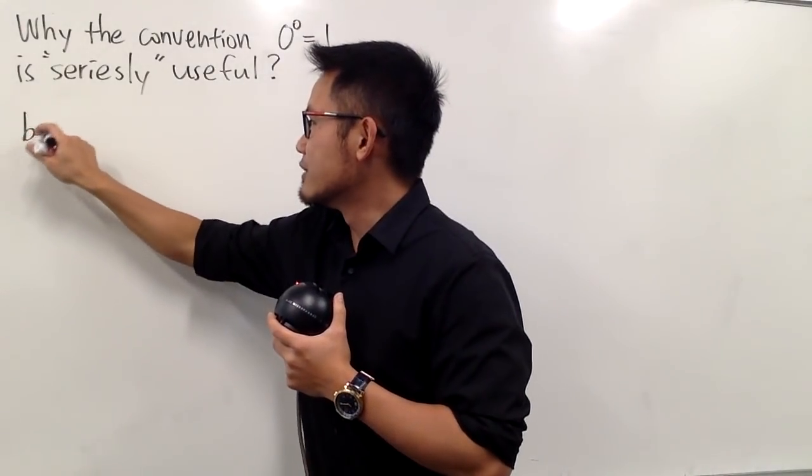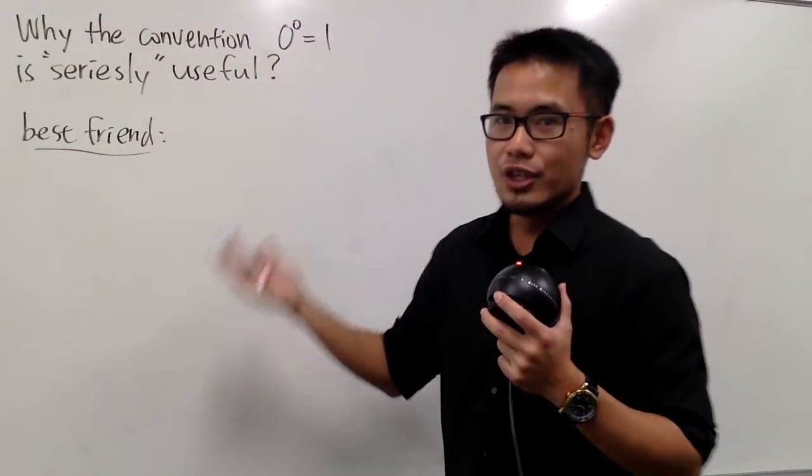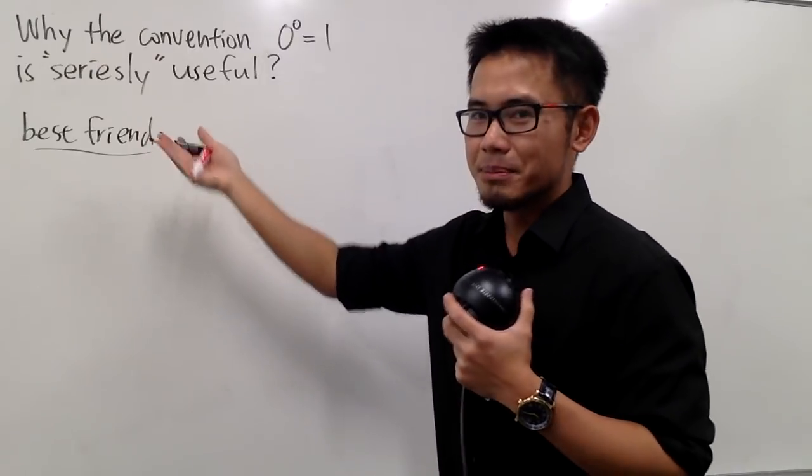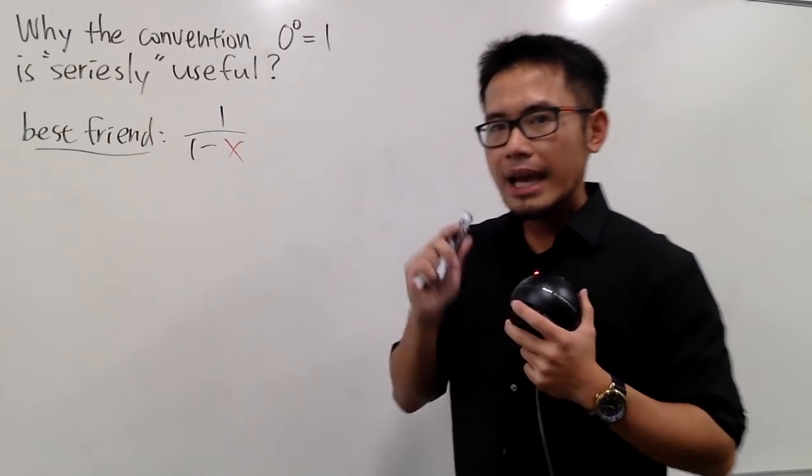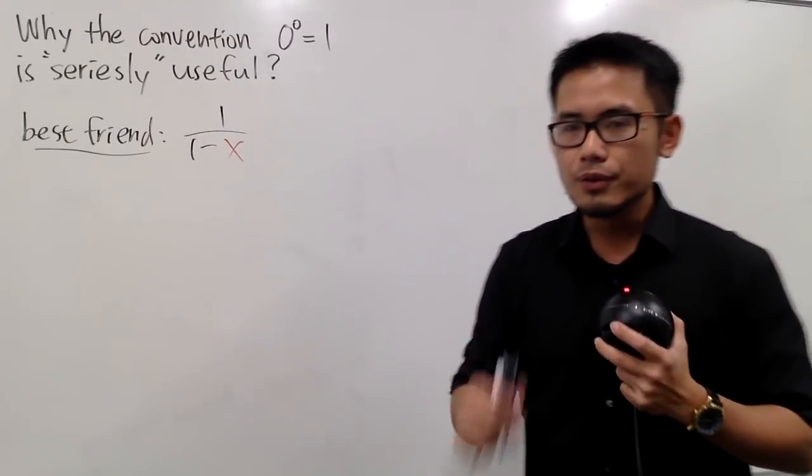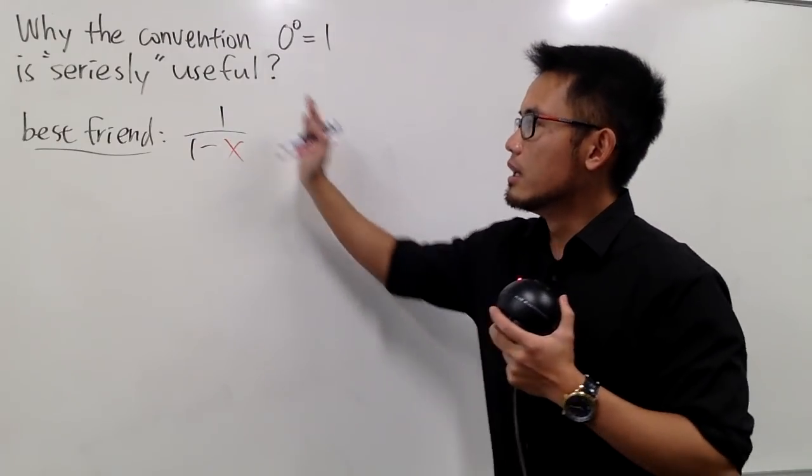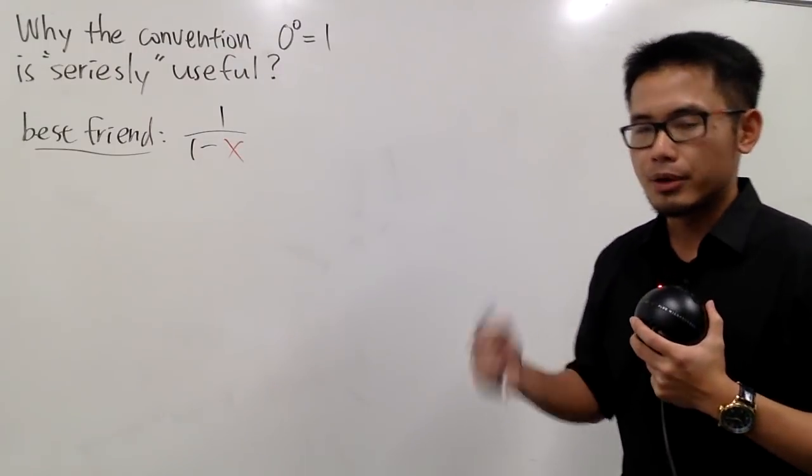And when we're talking about series, how can I not talk about my best friend, right? So here we go. This is my best friend in series. And of course you guys know this is just a geometric series. And what it says is that, well first of all I want to say this is my best friend, 1 over 1 minus x. And as you know, this is a rational function. And as a review, a power series is just a way to represent a complicated function such as this as an infinite polynomial.